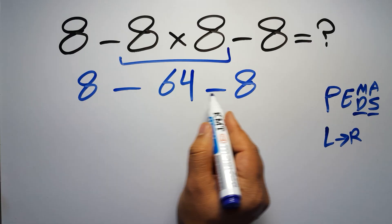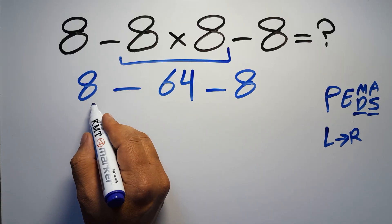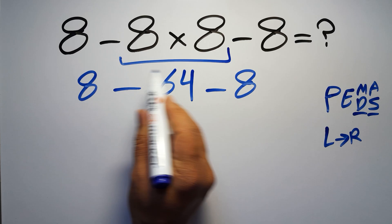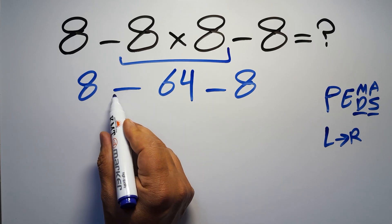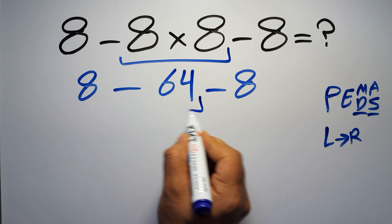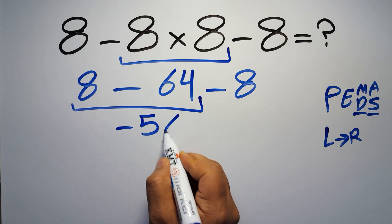Now we have two subtractions. When we have more than one subtraction in an expression, we have to work from left to right. So here first we do eight minus 64, which gives us negative 56.